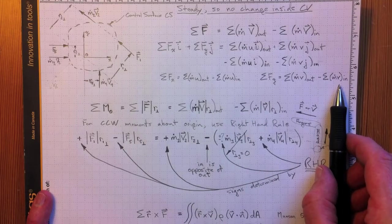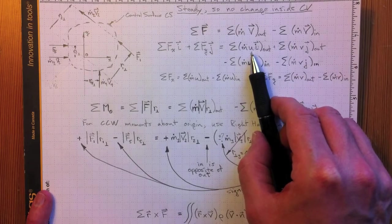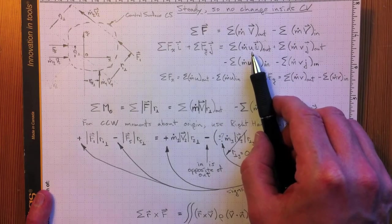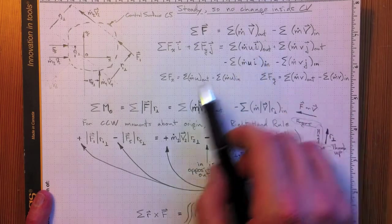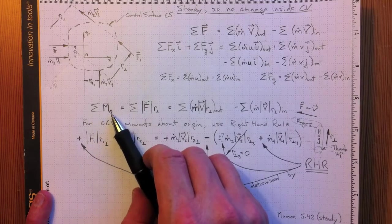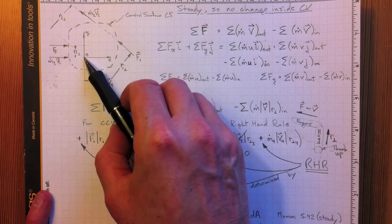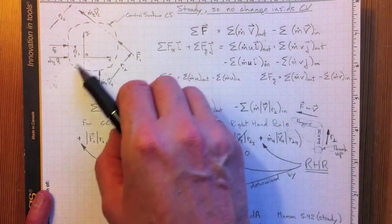Now we can do exactly the same kind of analysis with moments. These momentum flows in and out act just like forces. They produce resulting effects on the control volume. So if we take the sum of the moments around the origin, that's around this location here, and it could be anywhere because we can pick our coordinate system wherever we want it.